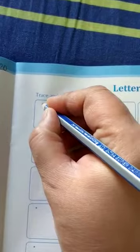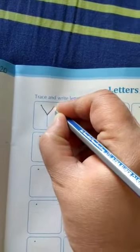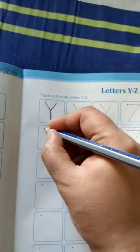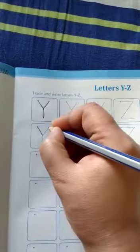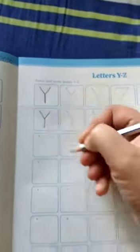So how to write Y? One slanting line, then go up in a slanting manner, then one straight line in between. One slanting line, one more slanting line, and come down in a straight manner.